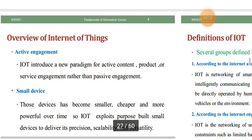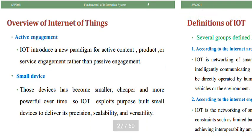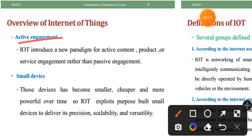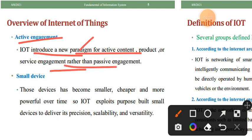Active engagement is a future feature of IoT. IoT introduces a new paradigm and environment for active content — products and services have significant engagement capacity. IoT introduces a new paradigm with significant capacity, creating systems that can manage and deliver products and services.